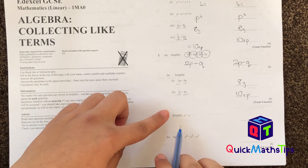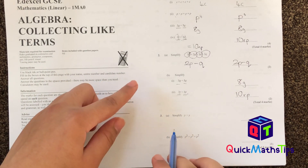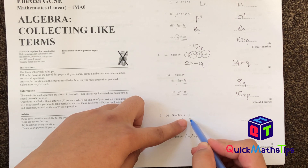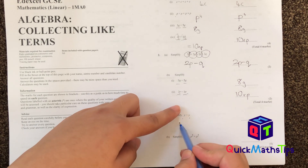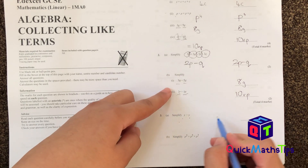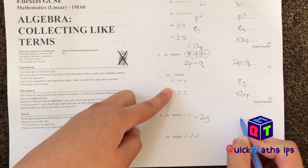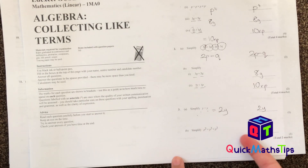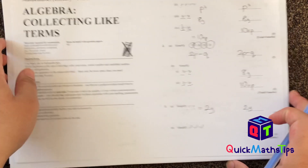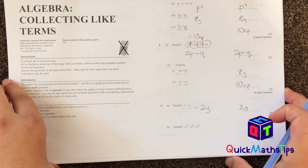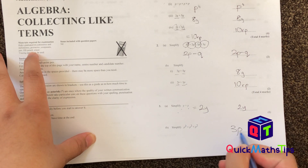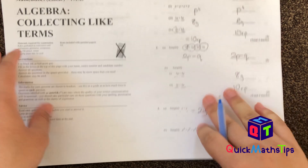This question says simplify Y plus Y. So imagine I have one bag of sweets and add another bag of sweets — how many bags of sweets do I have? Two. So this simplifies to give me 2Y. Now, P squared plus P squared plus P squared — so how many P squareds do I have? I have three of them, so this simplifies to give me 3P squared.